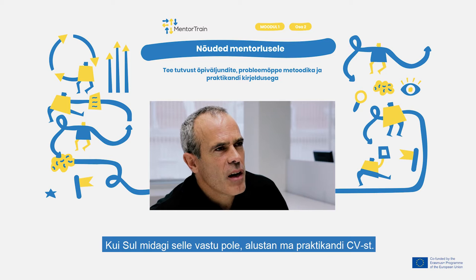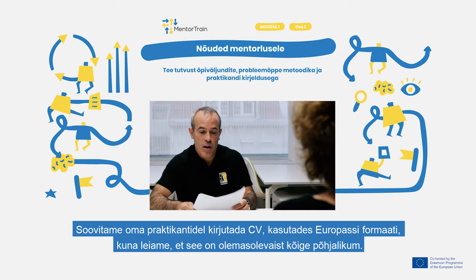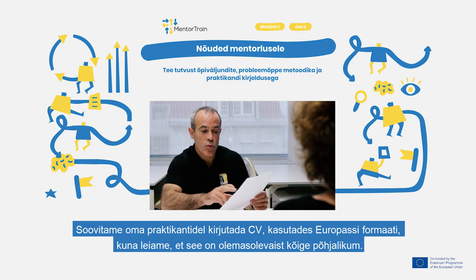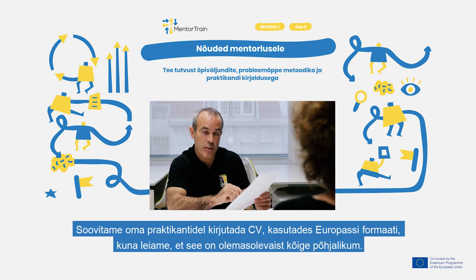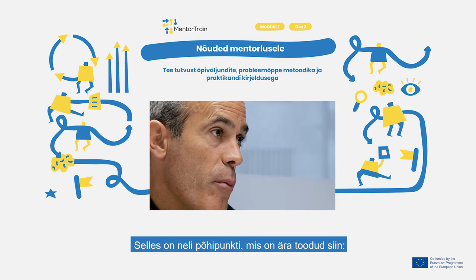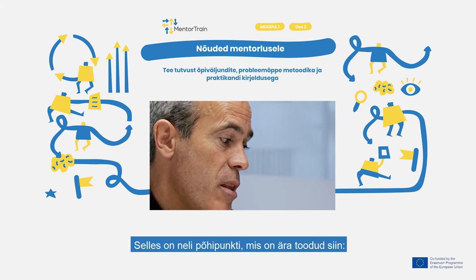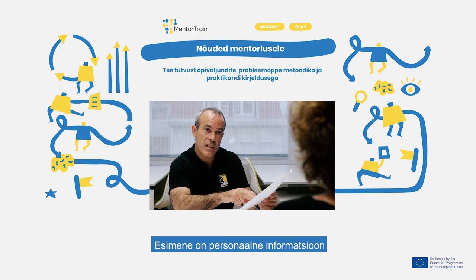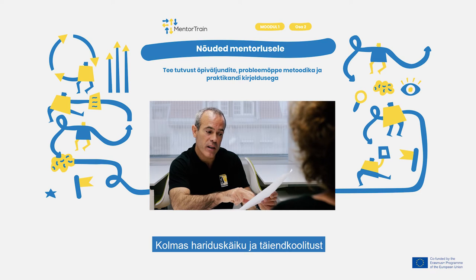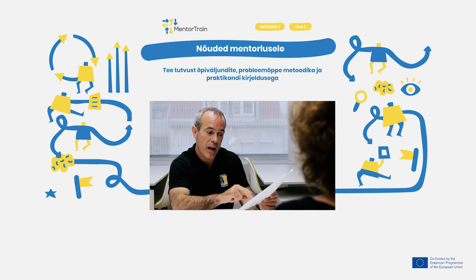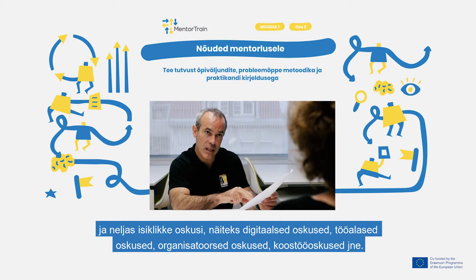If you don't mind, I will start with the curriculum vitae of the apprentice. We advise our apprentices to write their CVs using the Europass template because we think it's the most complete profile. There are four main points: first is about personal information, second is about work experience, third is about education and training, and fourth is about personal skills.